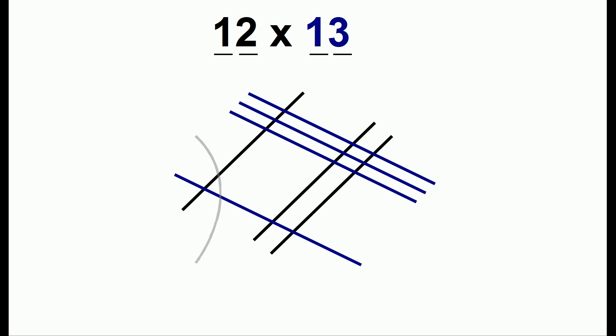Now we'll group together different lines, and we'll count the dots. Here we have six different dots. In the middle, we have five different dots. And on the other side, we have one dot. And that's the answer, 156.